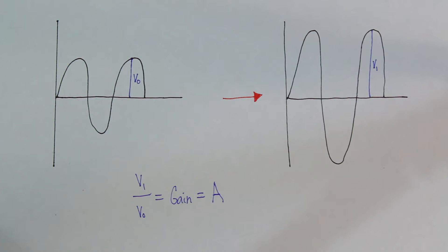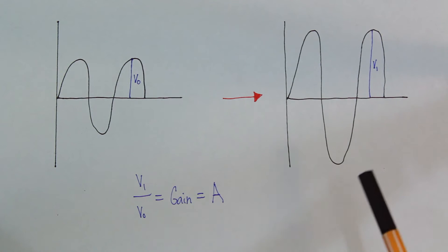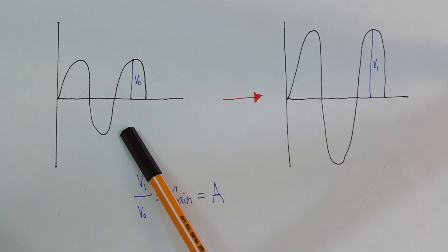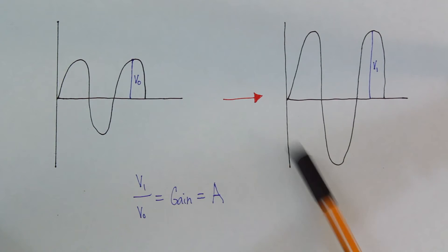Now amplification is just when you change the amplitude of some wave. So you can see here on the left we have the sum wave, and then on the right we have an amplified version of that wave. And all that means is that every single point along the first wave, the primary wave, is multiplied by some factor A to give us the second wave.